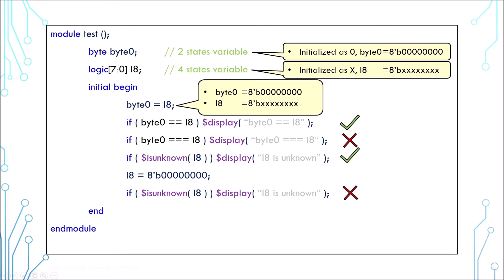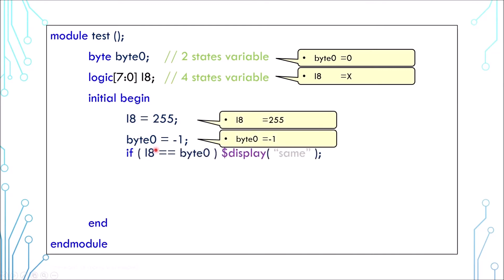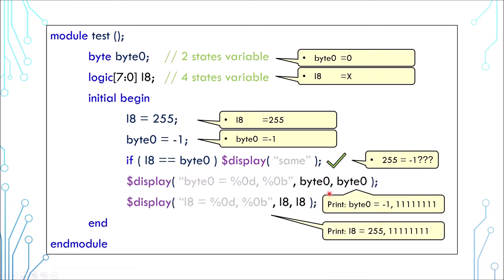Here's another example. First, we assign 255 to the logic, and then we assign negative one to the byte. If you compare the logic and byte, it will return true. That means negative one is equal to 255. That's because the comparison is performed on a bit basis—as far as the simulation is concerned, both variables are eight bits of ones.